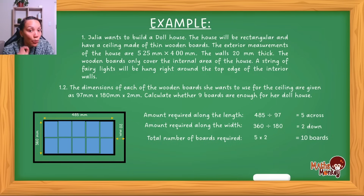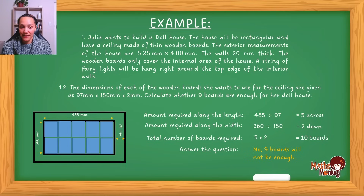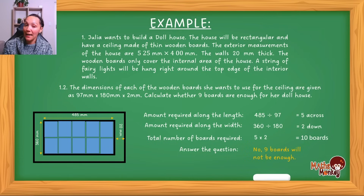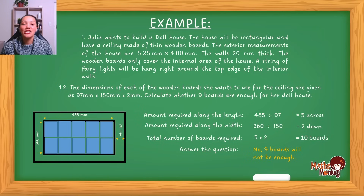The question says calculate whether nine boards are enough for a dollhouse. You need 10 boards, so you have to answer: no, nine boards will not be enough. Remember the two aspects of the subject — the mathematical aspect of doing the calculations, knowing when to multiply, when to add; and the literacy aspect of interpreting and understanding what you are calculating. So the final answer must include the literacy aspect — you must actually say that nine boards will not be enough.